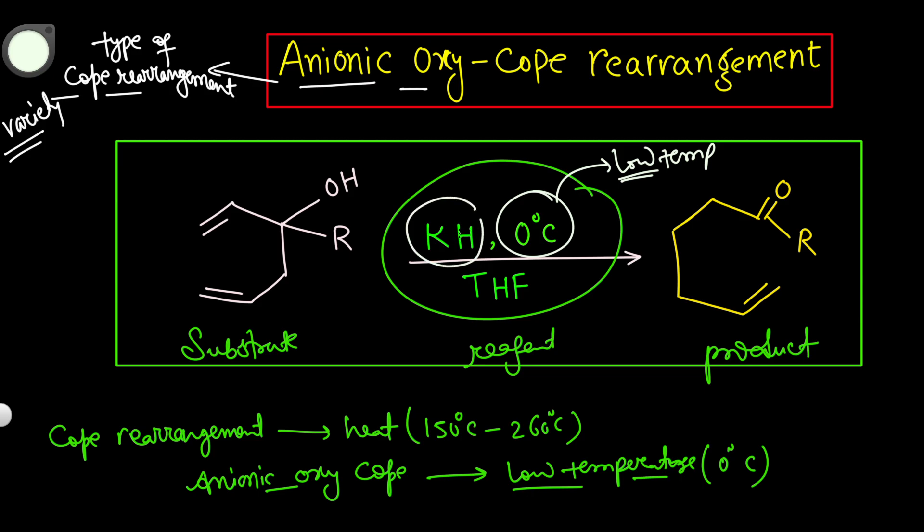We are taking potassium hydride as a base in THF solvent. We have a substrate, a reagent, and we get a product. The mechanism is the most important thing. In organic chemistry, if you want to be good, you have to draw the mechanism — without mechanism you will never learn organic chemistry. Don't try to memorize organic chemistry, otherwise you will be in trouble. Now let's start the mechanism of the anionic oxy Cope rearrangement.